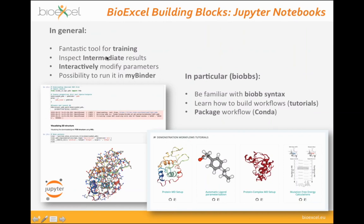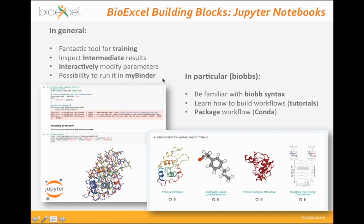It's really nice to be able to inspect intermediate results, like a three-dimensional structure viewed using the NGL Viewer, and to interactively modify parameters for different steps in the workflow — for example, changing the box type or size, or the number of steps in your simulation. You can run the workflow cell by cell, and there is also the possibility to run the whole workflow in MyBinder.